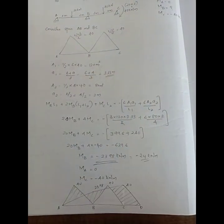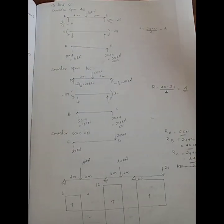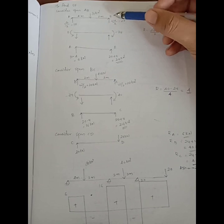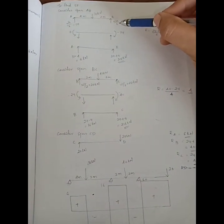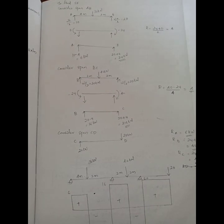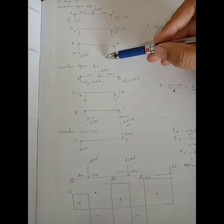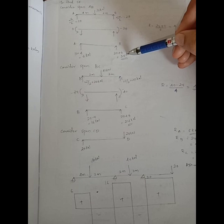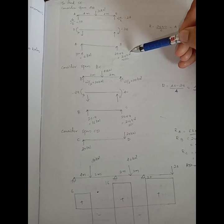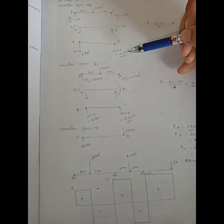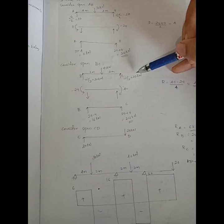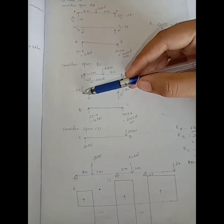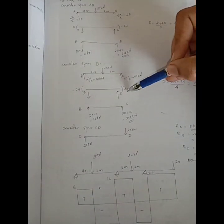We will draw the shear force diagram and the beam — the first diagram. We will consider the beam and write the reactions corresponding to the external load, then write the reactions corresponding to the unbalanced moment, and the final reactions for the beam. A and B are calculated. In the BC case, we will draw the external load. Here, the unbalanced load has an MA value and an MC value.